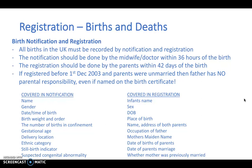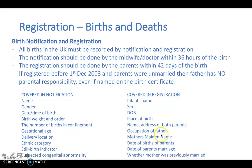For example, the notification covers gestational age, delivery location, ethnic category, stillbirth indicator, and so on. Whereas the registration refers to the mother's maiden name, the occupation of the father, and so onwards.